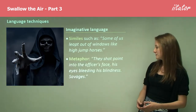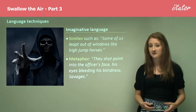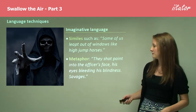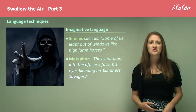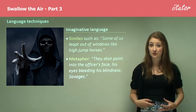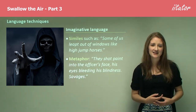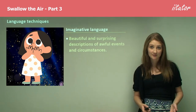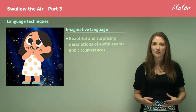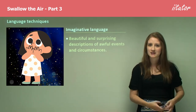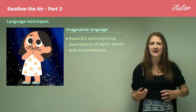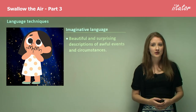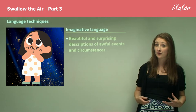The metaphor 'They shot paint into the officer's face, his eyes bleeding, his blindness — savages' uses a two-sentence structure with the single word 'savages' standing alone. It's imaginative because he's being shot with paint, not a bullet. You get the idea that Mae is almost hiding through this beautiful descriptive language, shielding herself from the grim reality through imaginative description. These beautiful and surprising descriptions of awful events are quite shocking — we're hearing about awful concepts like not belonging and the barriers facing Aboriginal people, yet the author describes it in a really beautiful, poetic way.